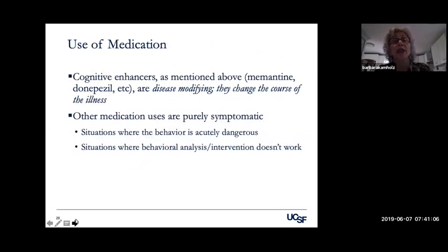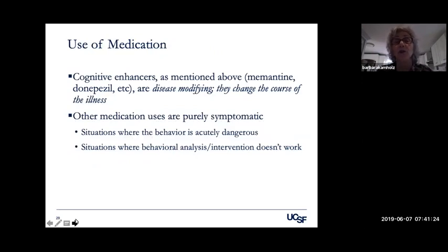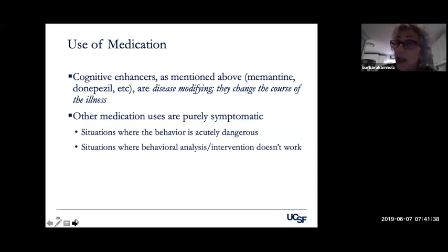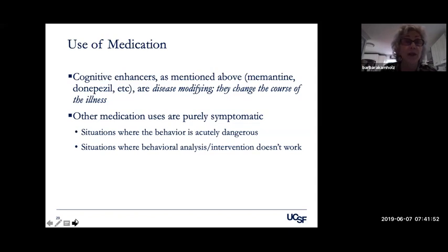There are medications — the cognitive enhancers as mentioned, which are disease-modifying in that they can change the overall course for a while. The other medication uses are purely symptomatic, for situations where behavior is acutely dangerous — the person cannot be calm, is aggressively attacking others, or at risk of hurting themselves — or where behavioral analysis simply does not work. People who are elderly with dementia can seem very frightening to others, and if they are also aggressive they may get less attention in homes, hospitals, or healthcare settings, which is not healthy and impedes care. Sometimes medication is essential for their care and overall safety.